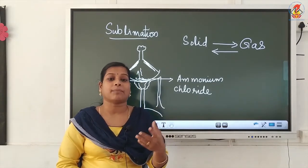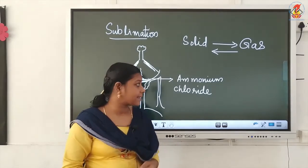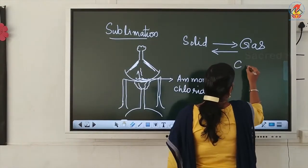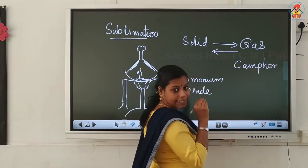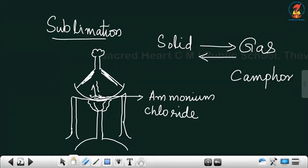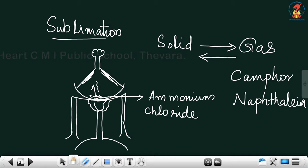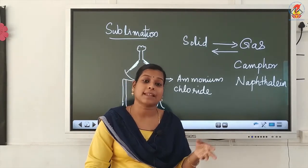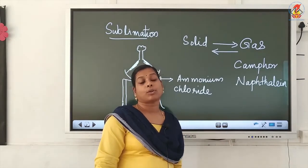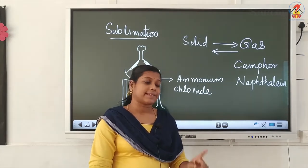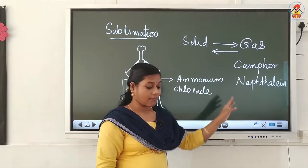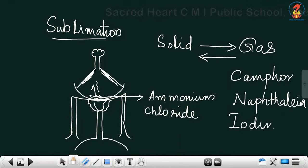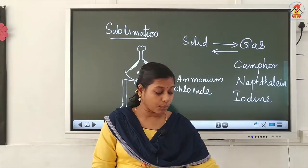Materials which can sublime are known as sublimable materials. Examples of sublimable materials are camphor, ammonium chloride, naphthalene, and iodine. Naphthalene is the white ball used for repelling moths kept in between cloth pieces in the almirah. Your mother might have kept those moth-repelling balls — those are actually naphthalene balls. So: naphthalene, camphor, and iodine are all sublimable materials.